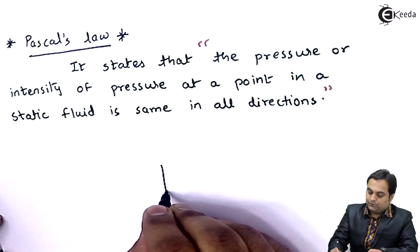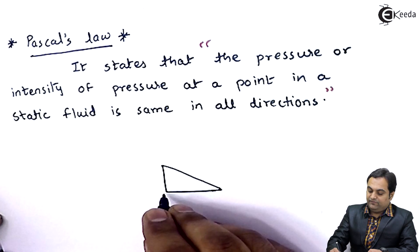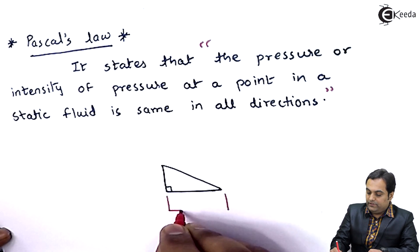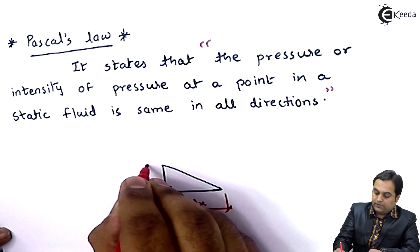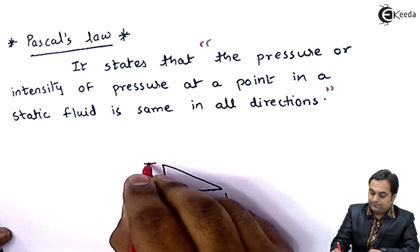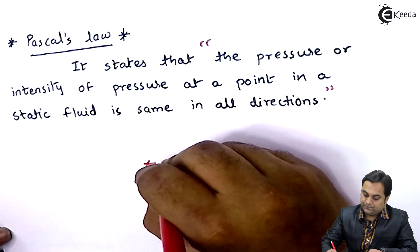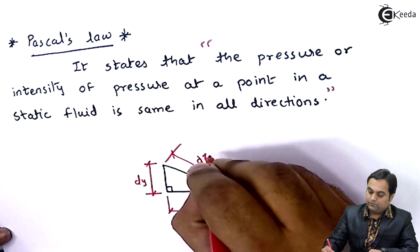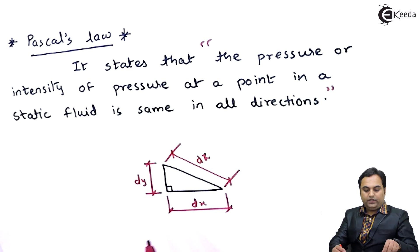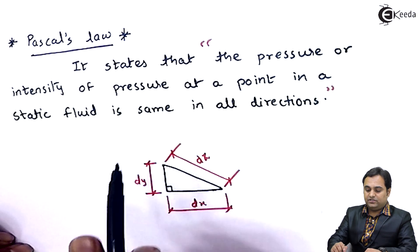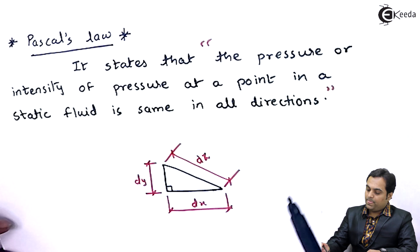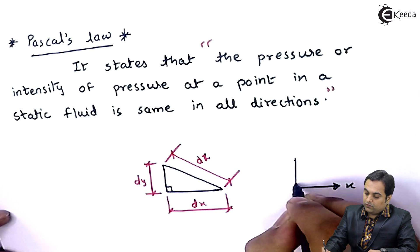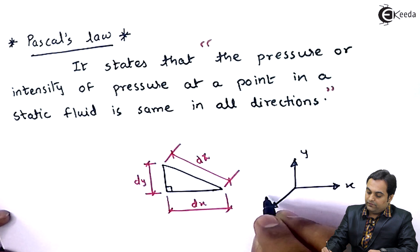For that, if I have an element — specifically a triangular element — where dx is the horizontal distance, dy is the vertical distance, and dz is the hypotenuse. The statement of Pascal's law is related to directions, so we consider the x direction, y direction, and z direction.